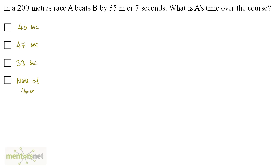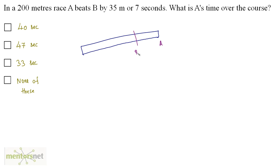In a 200 meters race, A beats B by 35 meters or 7 seconds. What is A's time over the course? A beats B by 35 meters, so when A is at the winning point, B is 35 meters behind him. That length of 35 meters corresponds to 7 seconds, which means B covers those 35 meters in 7 seconds.